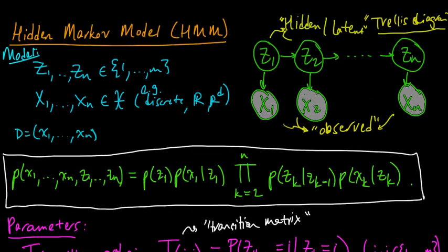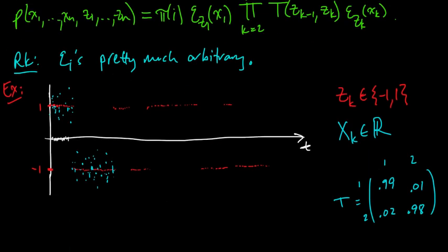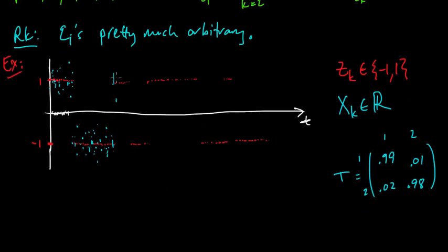That's what the model says. Conditioned on ZK, XK is conditionally independent of everything else. And you can check that. Actually, that might be a good thing to check. You can check that using the D-separation property, the D-separation theorem. So these are just these Gaussian distributed things.